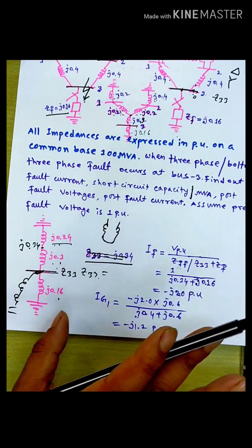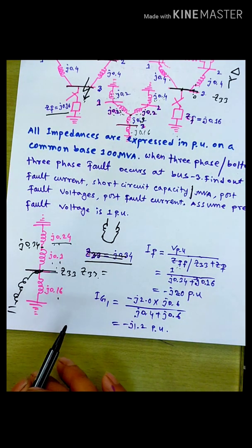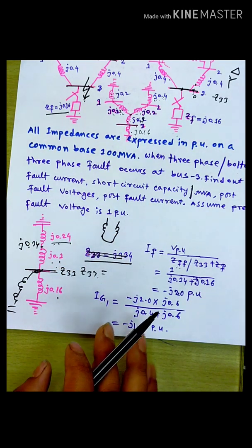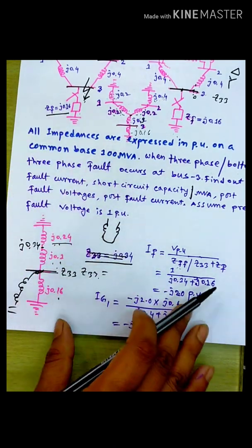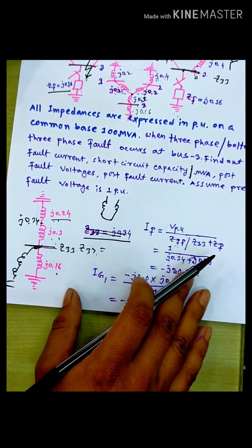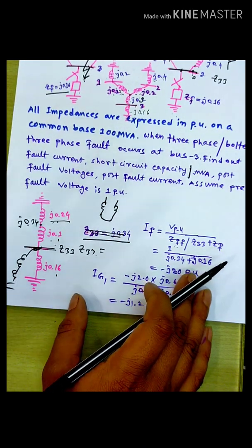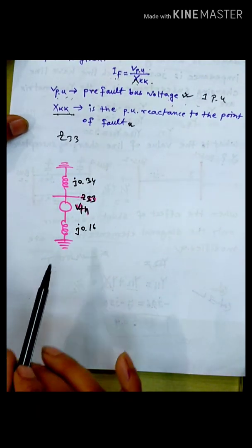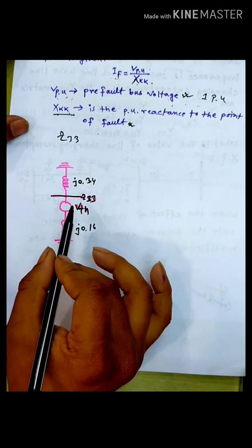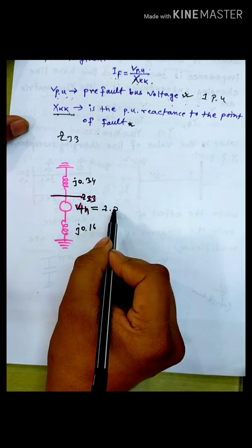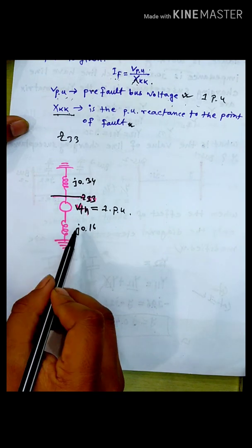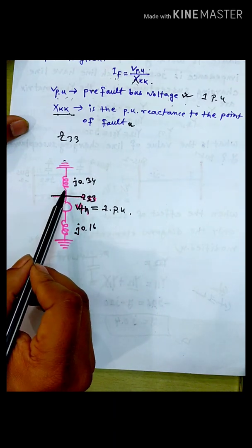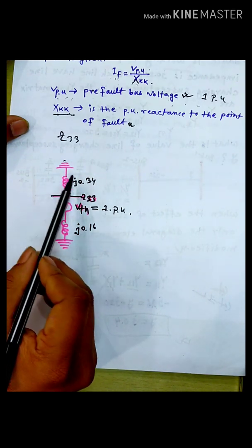But if we don't have fault impedance, we still have to count our fault. If we have a fault or a solid fault, we have to count our fault. Right now we will account for the type of 0.3. We have to count our fault. The fault voltage is 1 per unit. The fault resistance is shown.